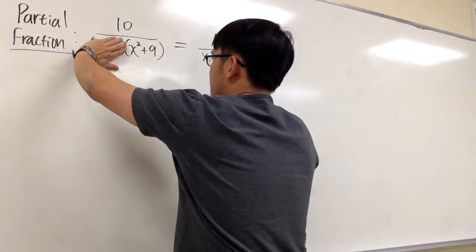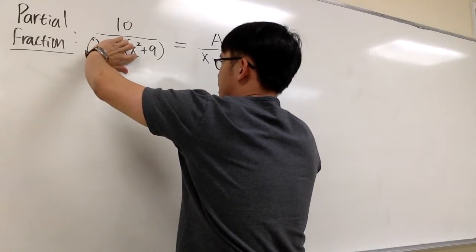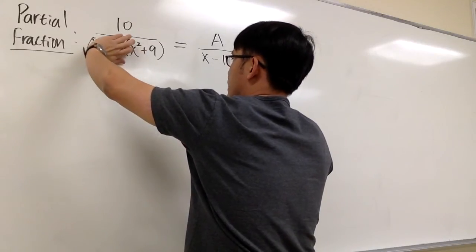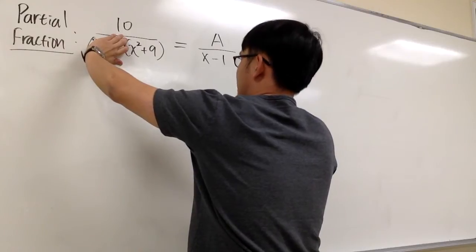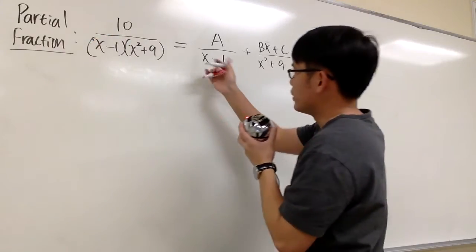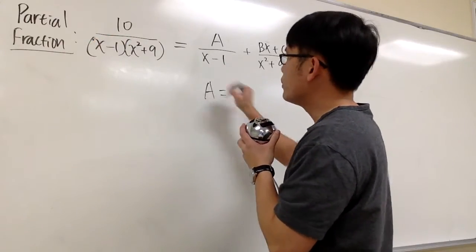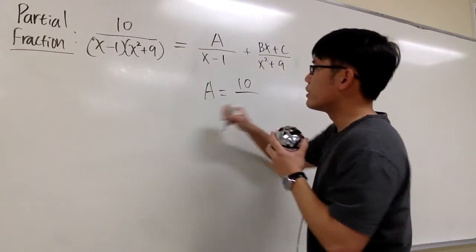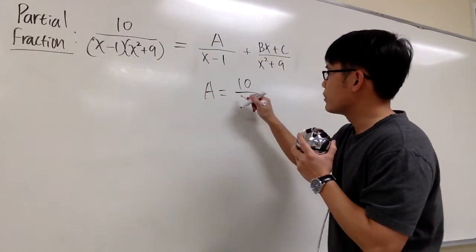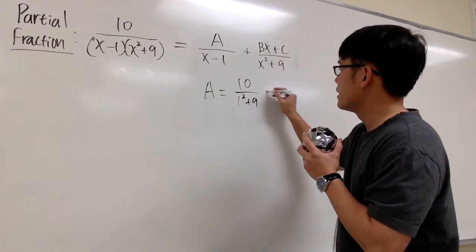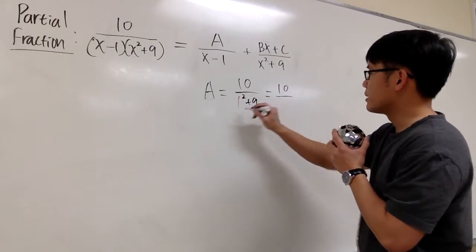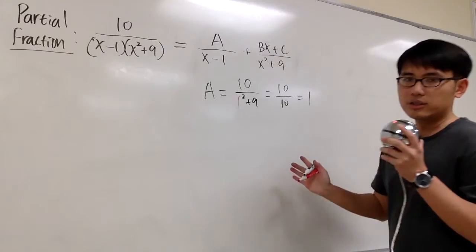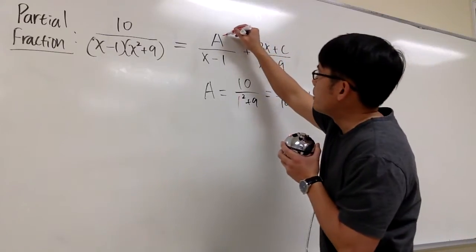So I will cover this up, and then plug in 1 into x right here. 1² + 9, which is 10. I have 10 over 10, which is 1. A is equal to 1. But let me just write this down for you. For the A value, I will just have 10 over plugging 1 into this x. So we have 1² + 9. You see, on the top it's 10. On the bottom it's also 10. So we have 1. So we can solve for A right away with the cover-up method.